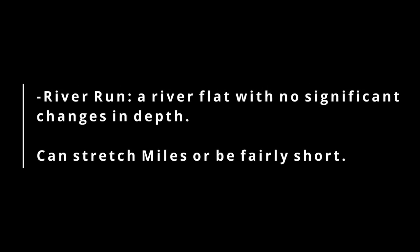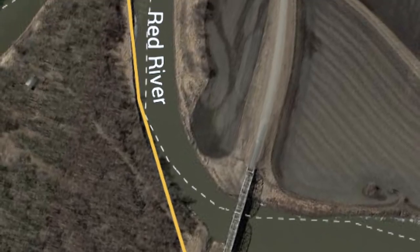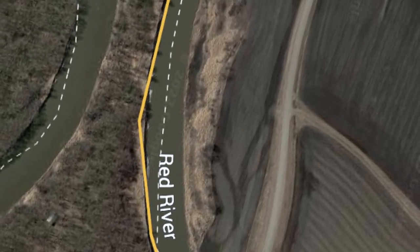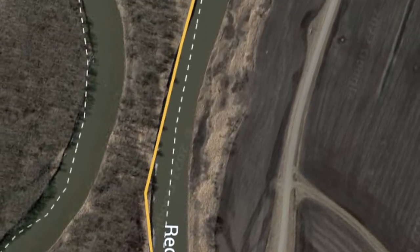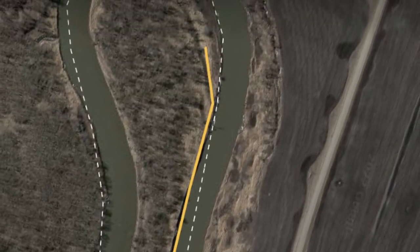Lastly, I'll explain a run. A run is just a river flat with no significant changes in depth. Sometimes they can stretch for miles until the next riffle, or they can be fairly short. Personally, I don't really fish runs often due to them being fairly characterless in terms of depth and structure. Here is an image of a run that was upstream of the bridge I was fishing in the previous clip. I walked this half-mile run on the bank and fished from multiple locations with very little luck — I caught a couple small fish, but that was it.